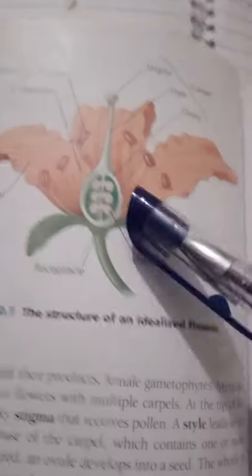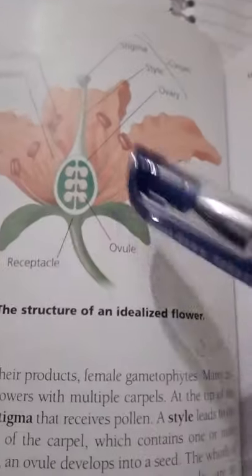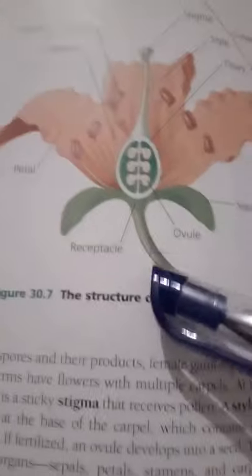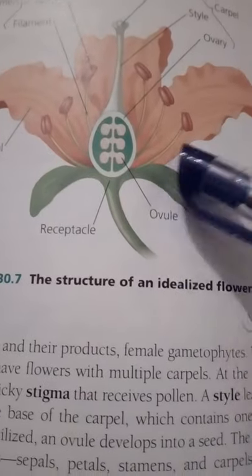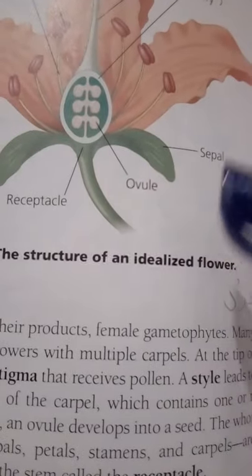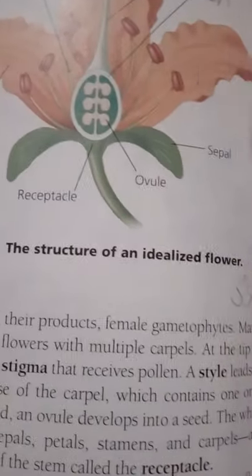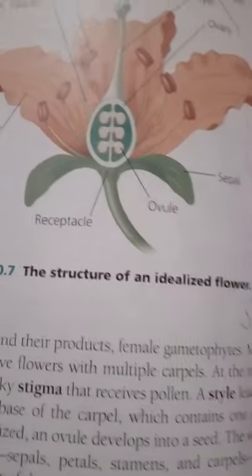Within the whorl of petals are the fertile sporophylls — floral organs that produce spores.